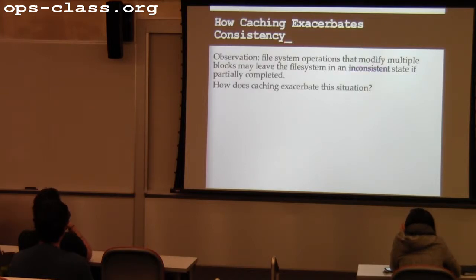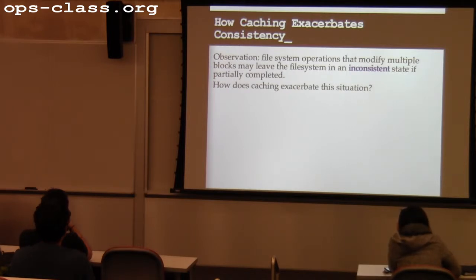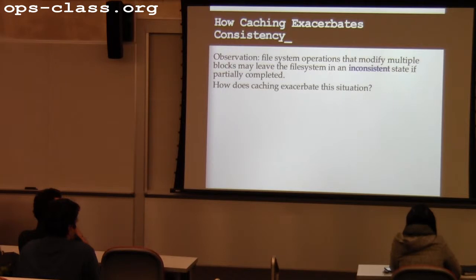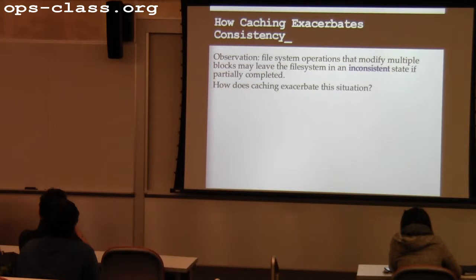Just a bit of review: file system operations typically have to modify multiple disk blocks in order to leave the file system data structures in a consistent state on disk. Once I start using memory as a cache, the information stays in the cache longer — and because it's in the cache, it's not on disk. Caching extends the windows of time where there are potentially dirty blocks in the cache that aren't on disk. If those are important to consistency and the system fails during that period, those blocks may never make it to disk and the disk may be left in an inconsistent state.